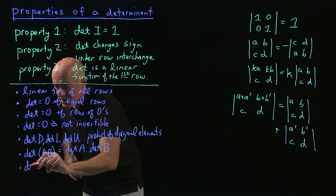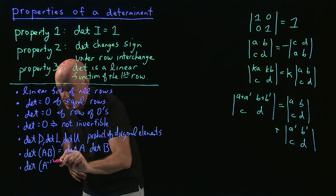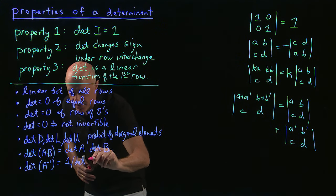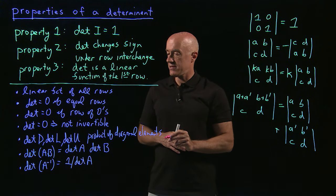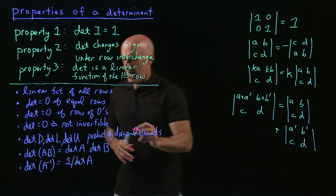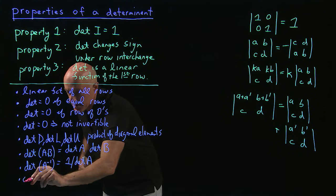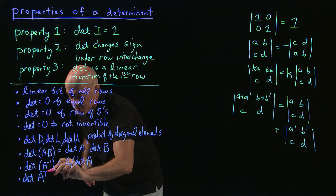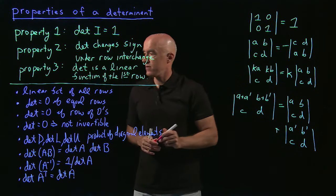The determinant of an inverse matrix, if A is invertible, equals one over the determinant of A. And the determinant of the transpose of A equals the determinant of A.